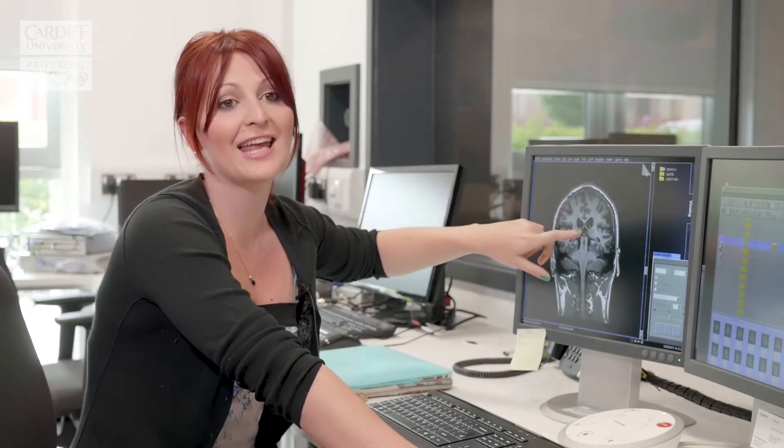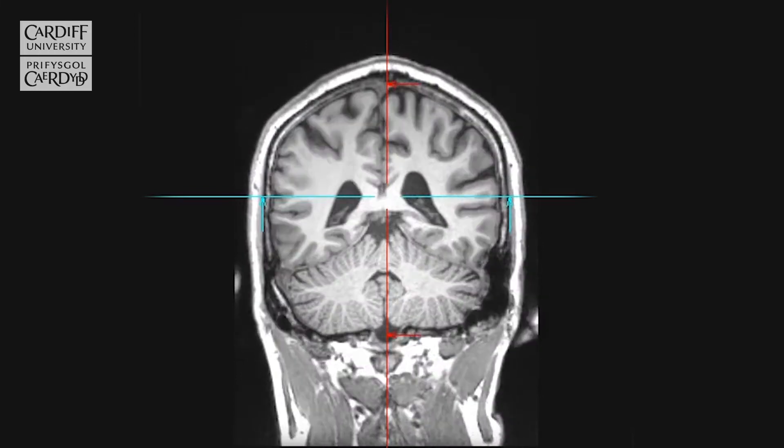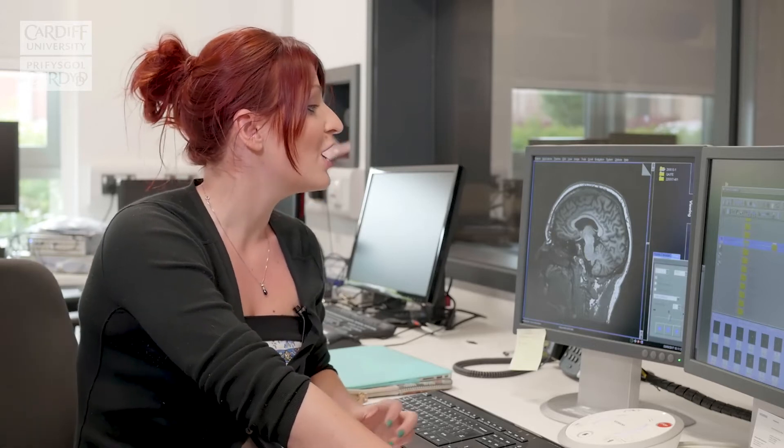These ventricles here start to get enlarged as the cells around them begin to atrophy. Here you can see a part of the brain called the corpus callosum — that's a large white matter bundle that connects both hemispheres of our brain together. Those connections are really important, and that's one particular region which we know also starts to atrophy in HD, and the myelin starts to shrink away as well.